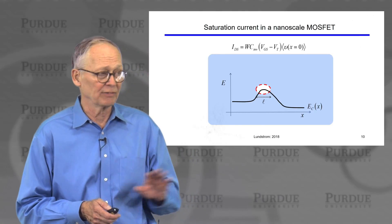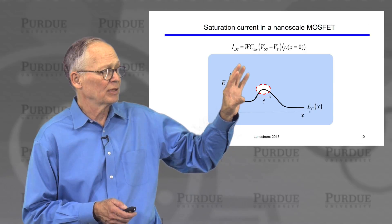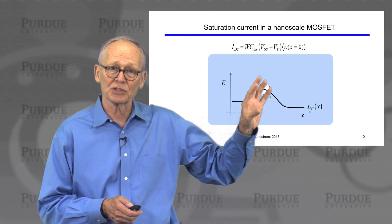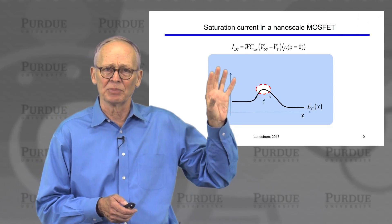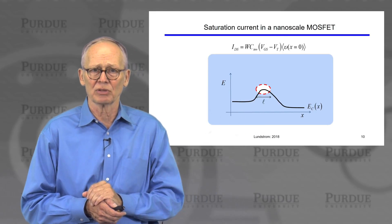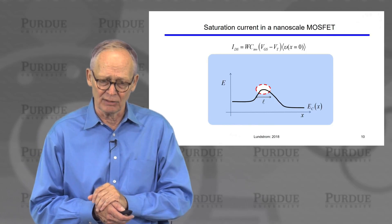How do we make sense of this result? Well, let's look at an energy band diagram. Our energy band diagram looks something like this. We're focusing on the region near the virtual source, the region where the electric field is low, where the potential is strongly under the control of the gate. That region has a length I'm writing as little script L.